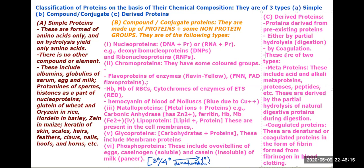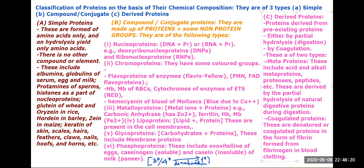There are two types of derived proteins. The first type, metaproteins, includes acids, alkali, peptides, and so on.